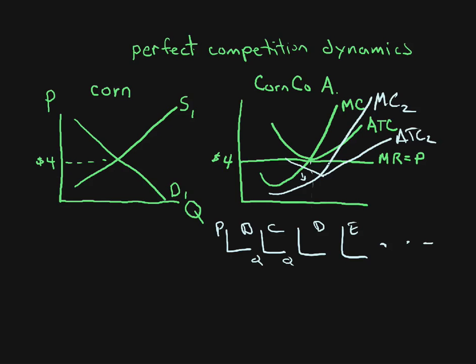Now what do you do? Marginal revenue equals this new marginal cost line. Look what happens — this company now has revenues greater than costs. Through their innovation they get profits. That's key: now they've got profits. All these other companies are looking at this particular situation.